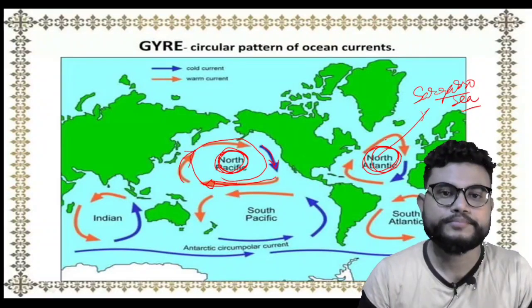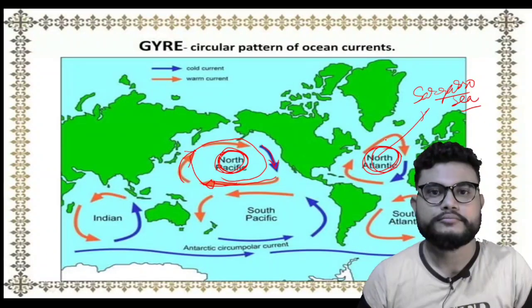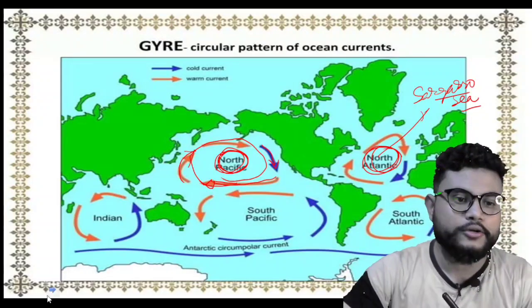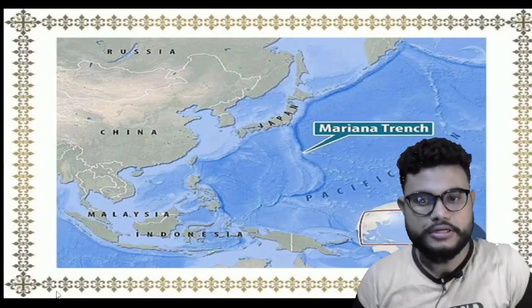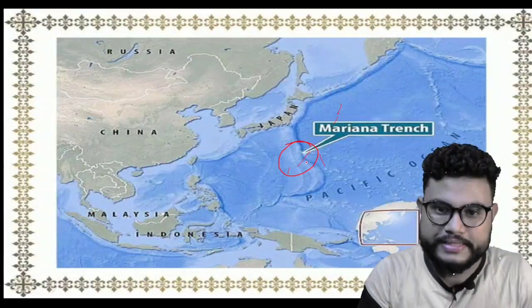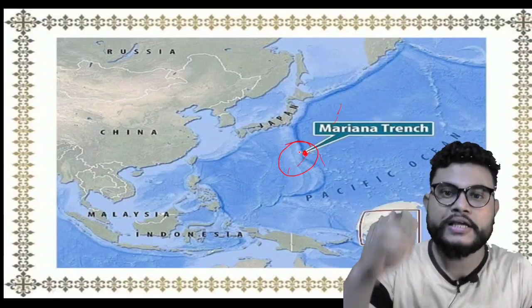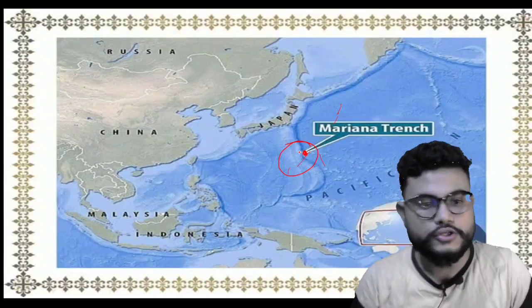One more important thing: where warm current and cold current meet, the world's best fishing ground is created. The best fishing ground is at the meeting point of cold current and warm current. The current is the flow of oceanic water. The Mariana Trench is located just below Japan, and it is the deepest place in the oceanic bed — 11,000 meters deep, which is 11 km deep.